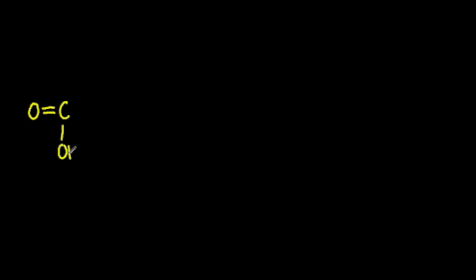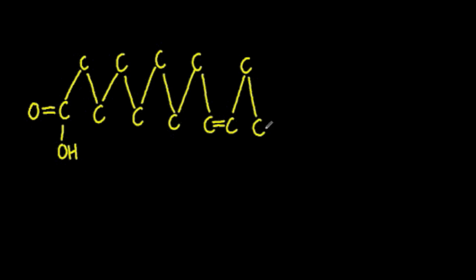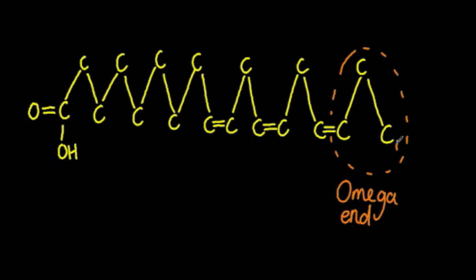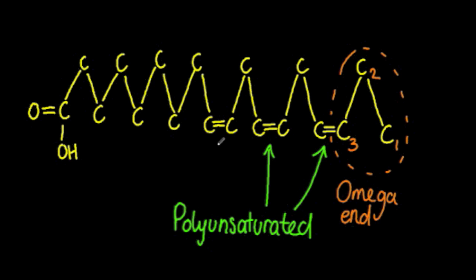Now a specific example of a cis fatty acid is called omega-3. It's called that because the first double bond exists on the third carbon from the omega end or the methyl group. As you can see here, this omega-3 fatty acid is also a polyunsaturated fatty acid because it has more than one double bond.